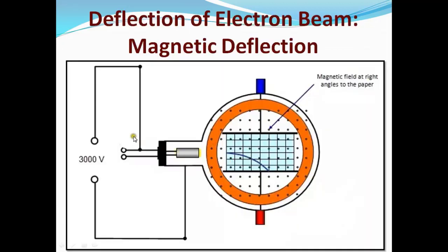In the first figure we see magnetic deflection, where high voltage current is passed and there is a six-volt battery in the circuit. The beam of electrons is passed through here. The magnetic field is at right angles to the paper, and we can see that the beam of electrons gets deflected — shown by the blue line in the graph — and hence due to the magnetic field this deflection occurs, so we call it magnetic deflection.